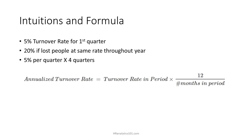As a simple, intuitive example, if I have a 5% turnover rate for the first quarter of the year, then I would have a 20% turnover rate if I continue to lose people at that same rate for the rest of the year — 5% per quarter for four quarters.